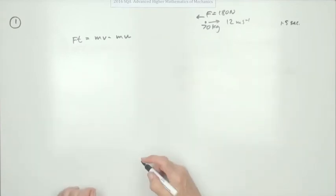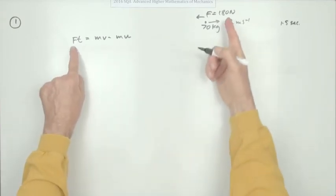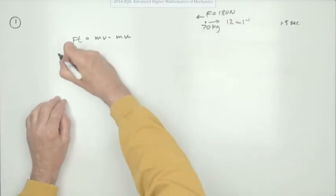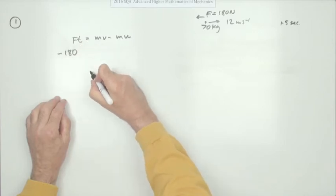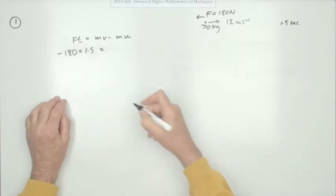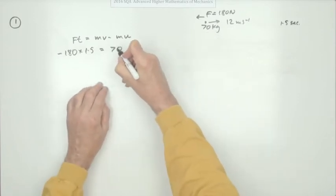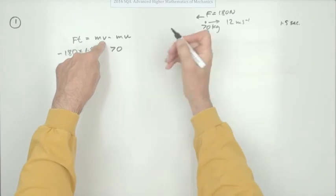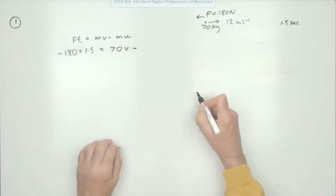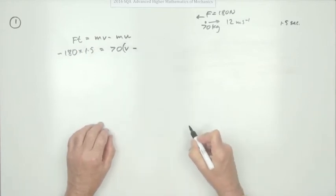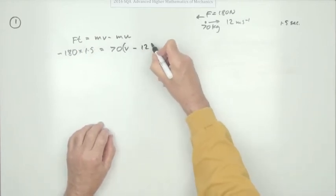So we'll start with this one. What we've got - the force is 180 newtons but it's acting against the direction so I'll be negative 180 times the time it took 1.5 equals the mass which is 70 times the final velocity which is what we've got to find v minus, and now since the mass is common to them both we could simply bracket that and put minus 12.